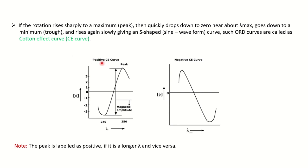We can tell whether a curve shows a positive or negative Cotton Effect as follows: when the peak is on the longer wavelength side, it is considered a positive Cotton Effect curve. When the peak is towards the shorter (minimum) wavelength, it is considered a negative Cotton Effect curve. Keep in mind: peak at higher wavelength = positive Cotton Effect; peak at lower wavelength = negative Cotton Effect.